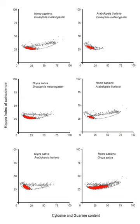In bacteria, the promoter is recognized by RNA polymerase and an associated sigma factor, which in turn are often brought to the promoter DNA by an activator protein's binding to its own DNA binding site nearby. In eukaryotes, the process is more complicated, and at least seven different factors are necessary for the binding of an RNA polymerase II to the promoter. Promoters represent critical elements that can work in concert with other regulatory regions to direct the level of transcription of a given gene.